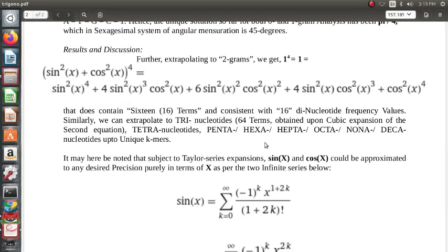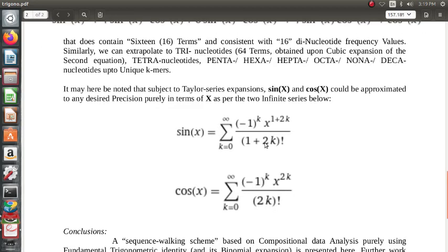For 64, which is going to be triplet frequency, right, so we can cube this equation. We will get 64 terms. And it will be noted here that it is subject to Taylor series expansions. Sin(x) and cos(x) can be approximated to any desired precision purely in terms of x as per the two infinite series below.